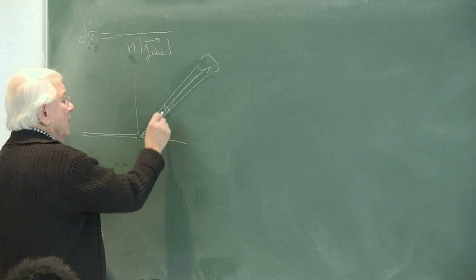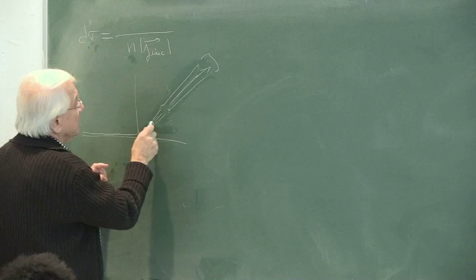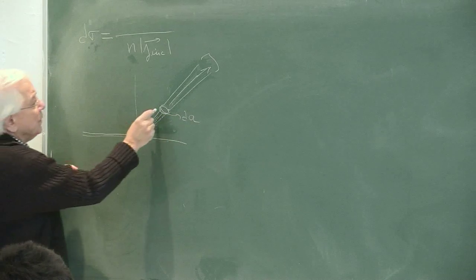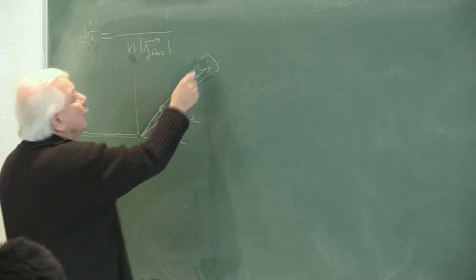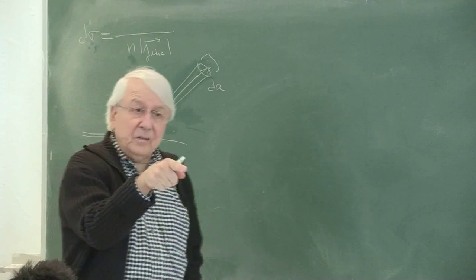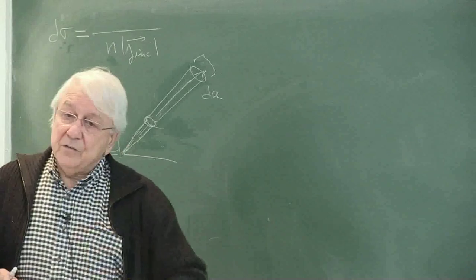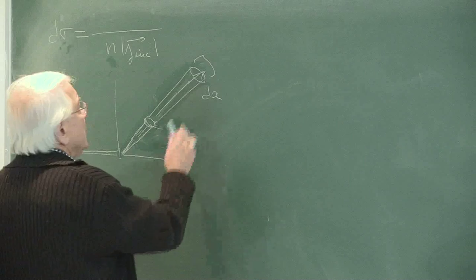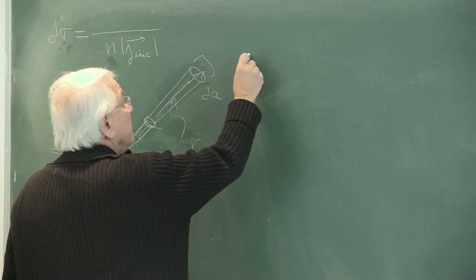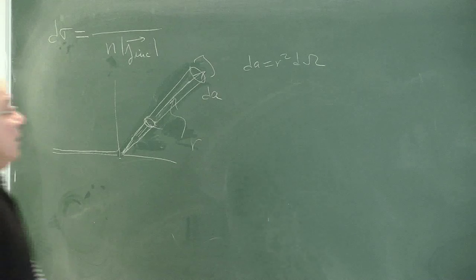Consider the associated area element dA at the detector. What is the relationship between this dA and the solid angle dΩ? It is perhaps better to consider the dA at the detector, because it is the detector dA — the number of particles going through the solid angle dΩ which are reaching the detector. What is the relationship between dA, dΩ, and the distance R?